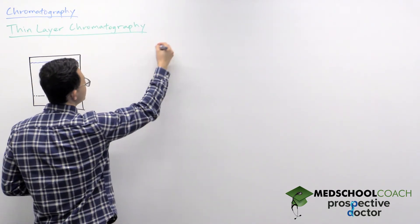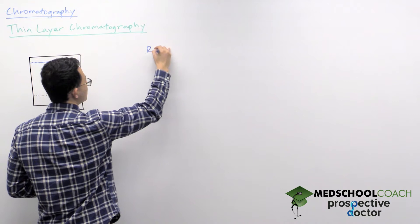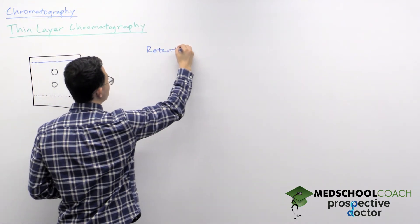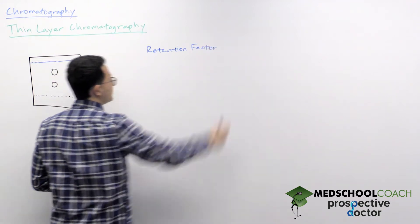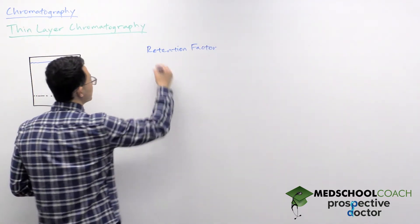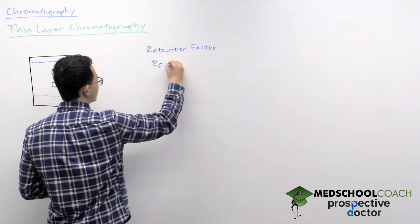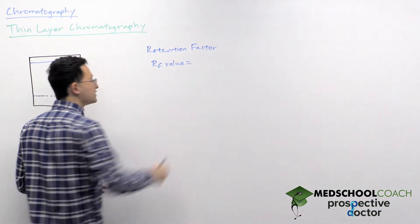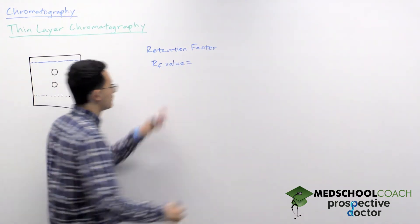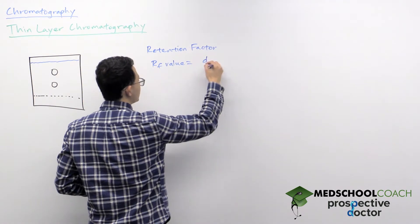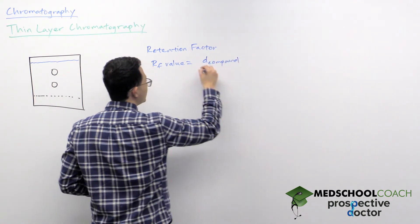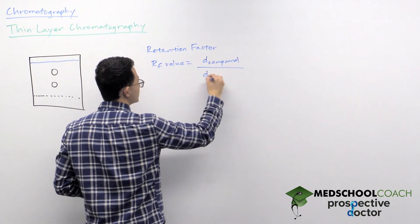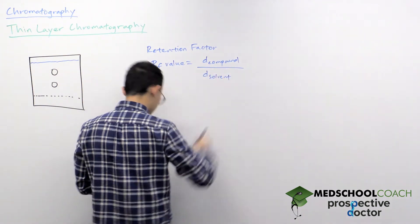The RF value has different names—sometimes it's called the retention factor, sometimes it's called the ratio to front value. But regardless, the RF value is something you should be able to recognize from MCAT, and its value you can calculate with this equation right here, which is going to be the distance traveled by each compound in your mixture divided by the distance traveled by your solvent.